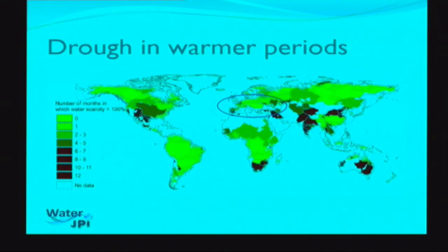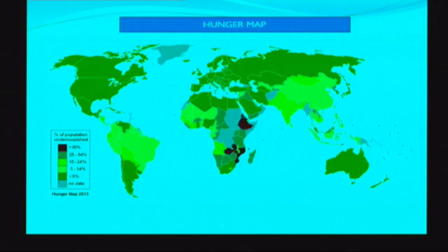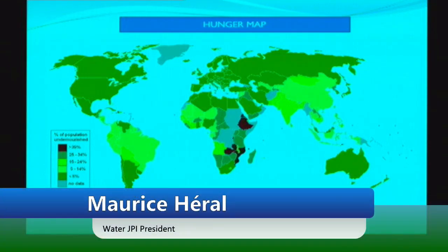The same problems will occur in the US and parts of Canada. Overlaying the hunger map, 35 percent of the population in parts of Africa is undernourished. In India, roughly 20 percent of inhabitants are in poverty, and even China has not completely escaped this issue.